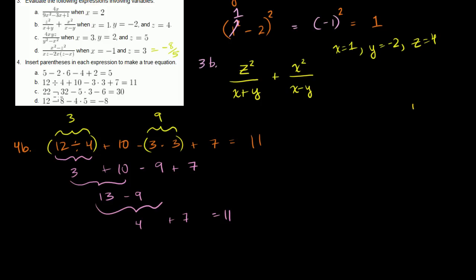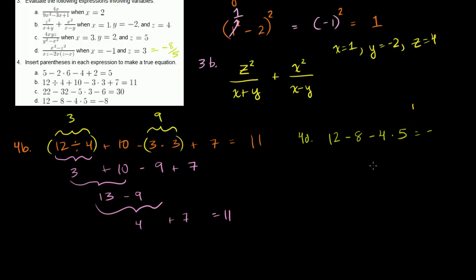Problem 4d: 12 minus 8 minus 4 times 5 equals negative 8. With traditional order of operations, we'd do 4 times 5 first to get 20, then 12 minus 8 is 4, and 4 minus 20 is negative 16. That's not right, so we need to experiment with parentheses.